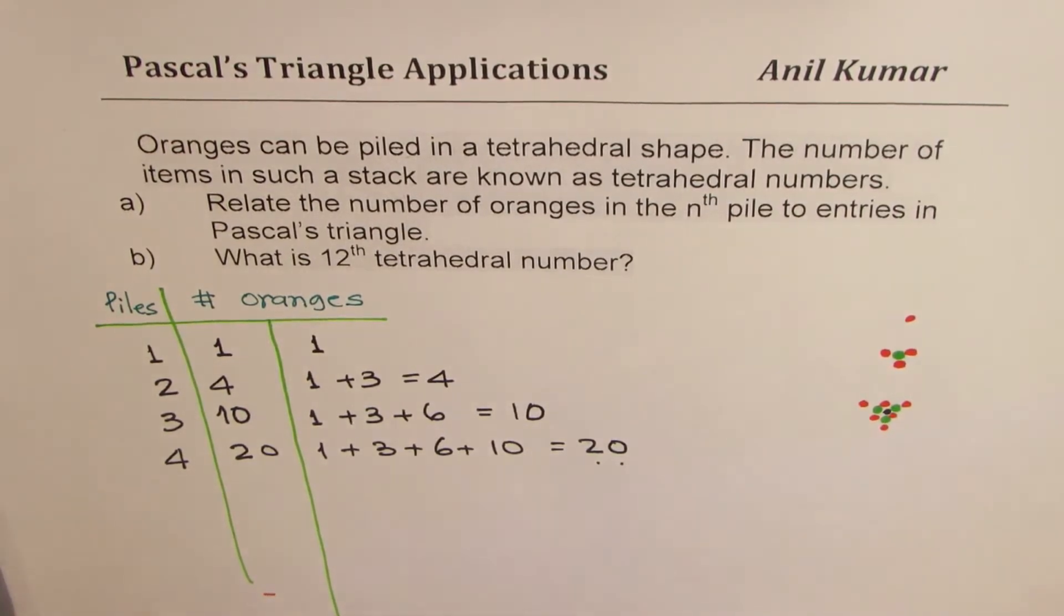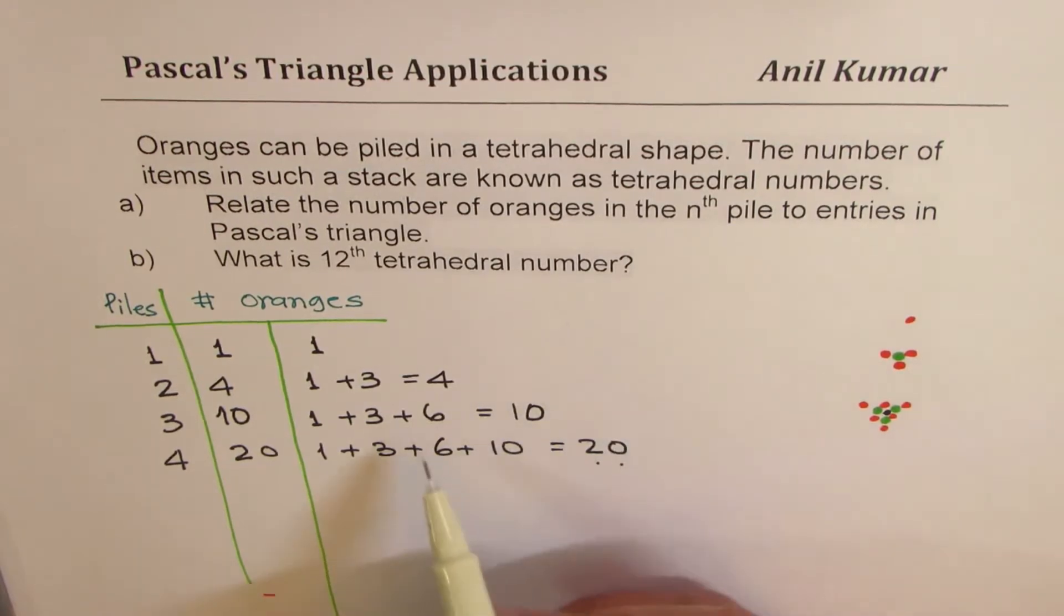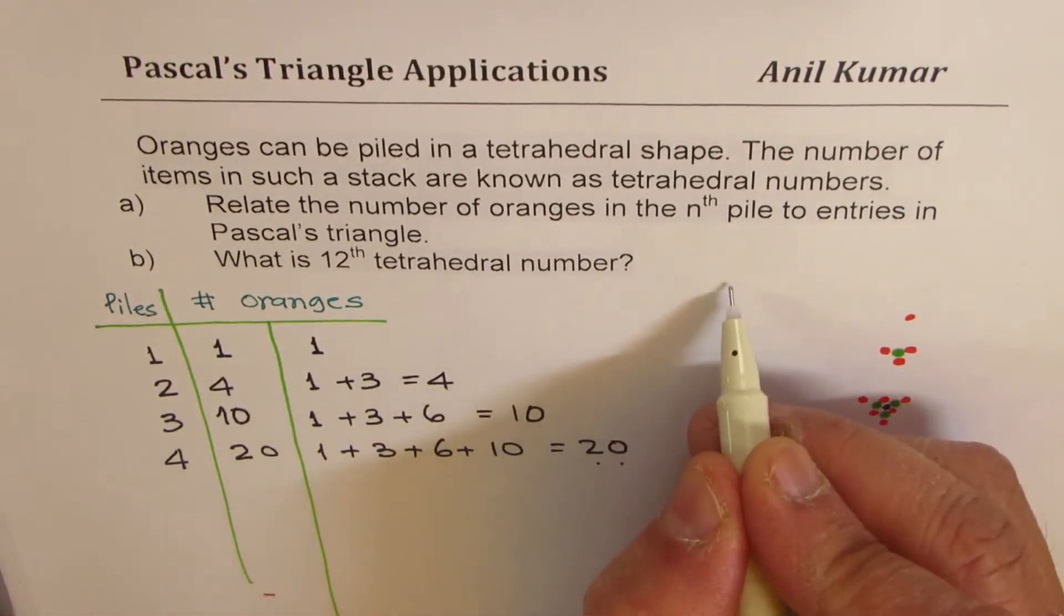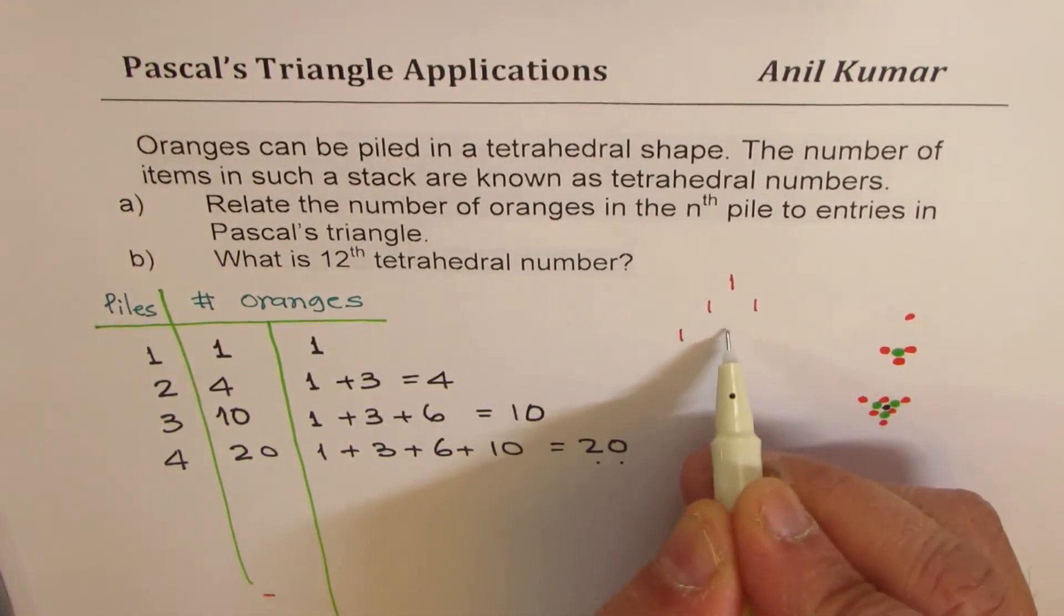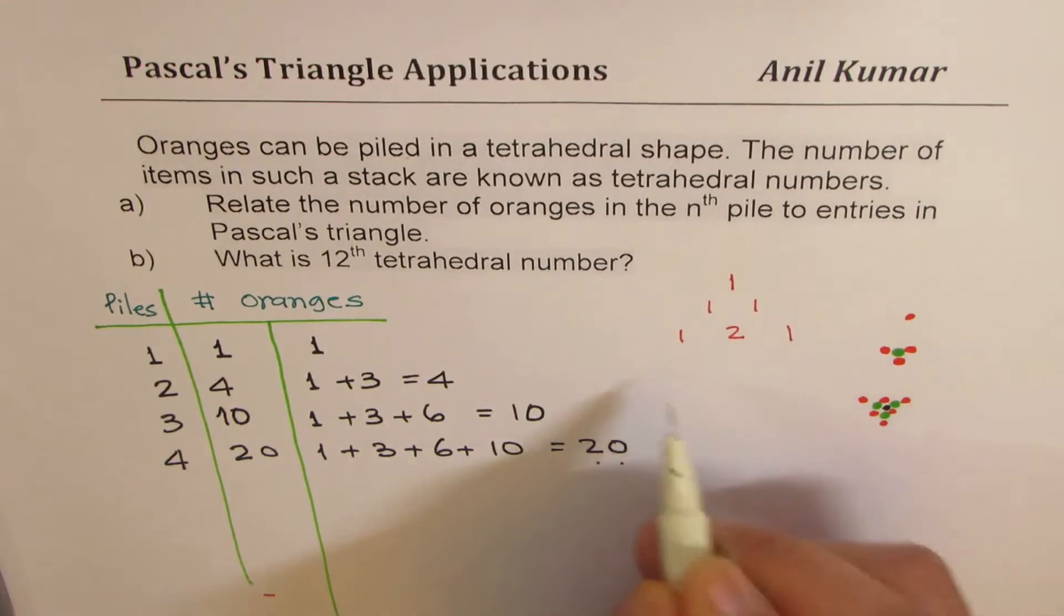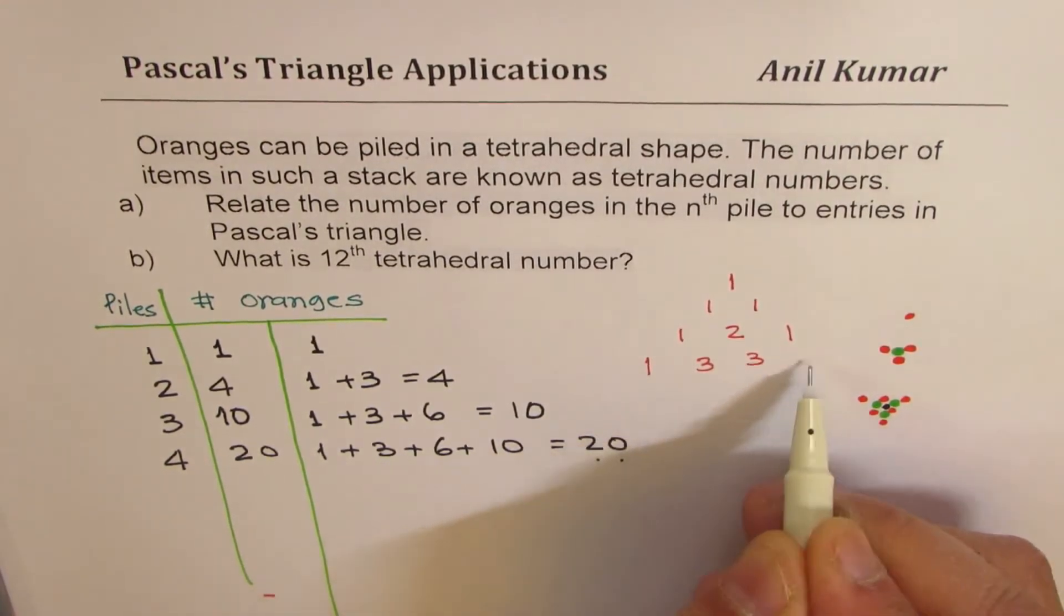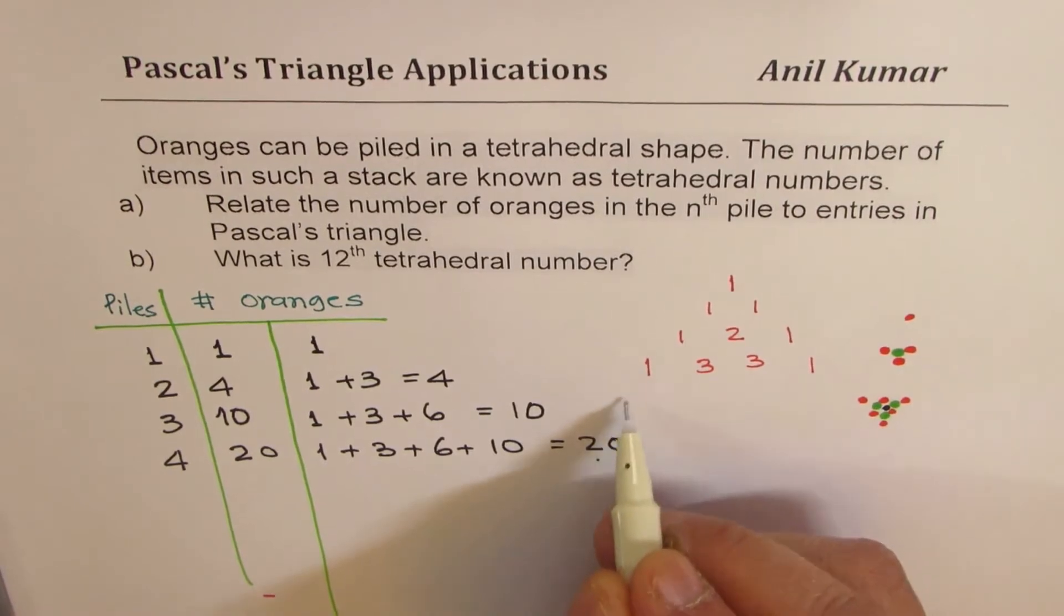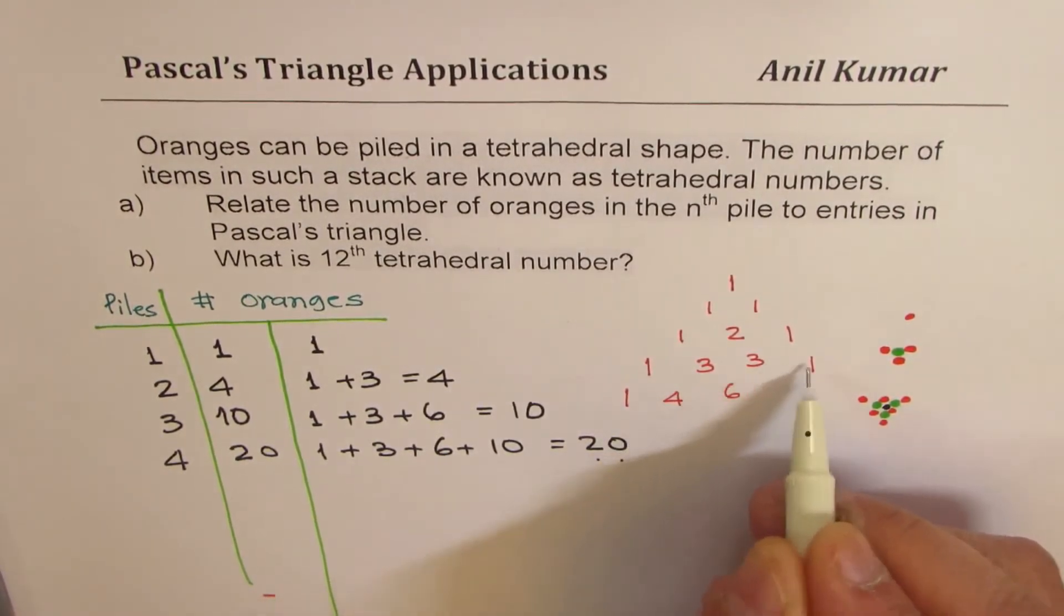So what I will do here is I'll now create the Pascal's triangle, and then we'll see if there is some relation. Beginning with one, it goes down one, one. And then one, adding these two gives me two, then one. And then one. One plus two is three. Two plus one is three. This is one. And then one. Three plus one is four. Three and three, six. Three plus one is four.